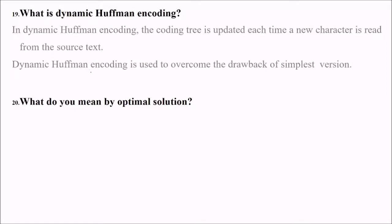What is dynamic Huffman coding? In dynamic Huffman encoding, the coding tree is updated each time a new character is read from the source text. Every time a new character is inserted, we check for the Huffman encoding. Dynamic Huffman encoding is used to overcome the drawbacks of the simplest version.